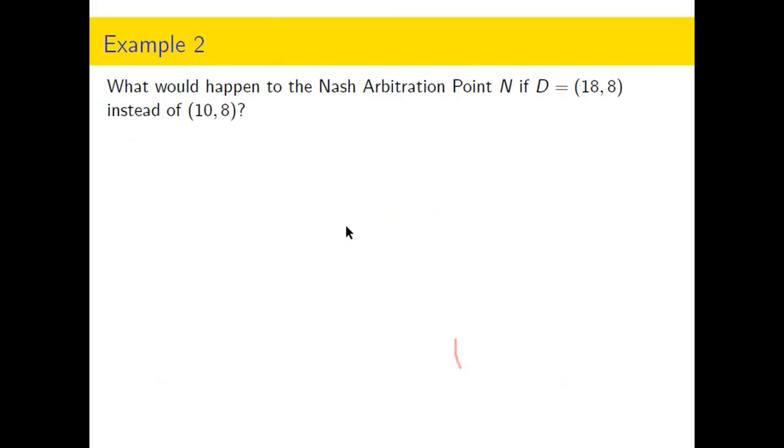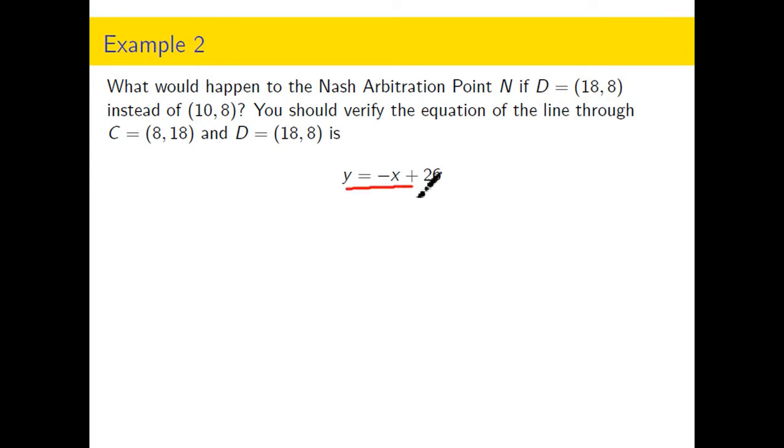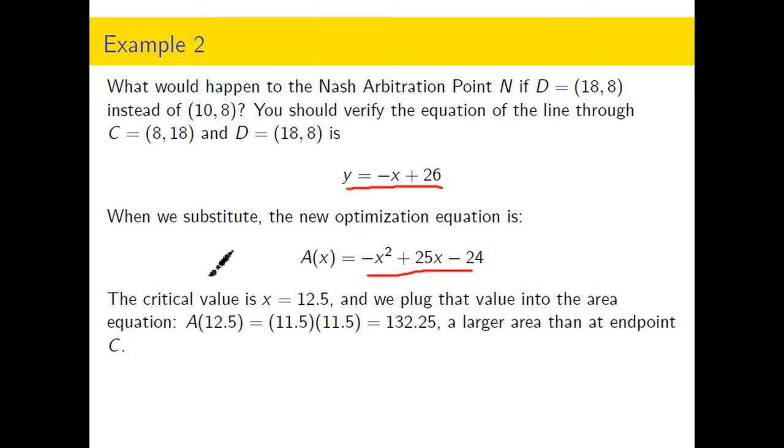So now we're looking at the situation where I've changed the old point D to the new one. And here's just an example that you can work through on your own. I've got the outline of it here. This is the line that would contain both C and D. And this is what you get when you plug into the area equation and simplify. We're going to take that derivative, set it equal to zero, which is going to be a minus 2X plus 25. So when you solve for that critical value, setting that equal to zero, you're going to get a critical value of 12 and a half.